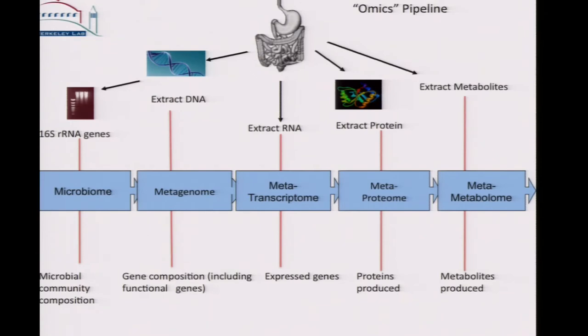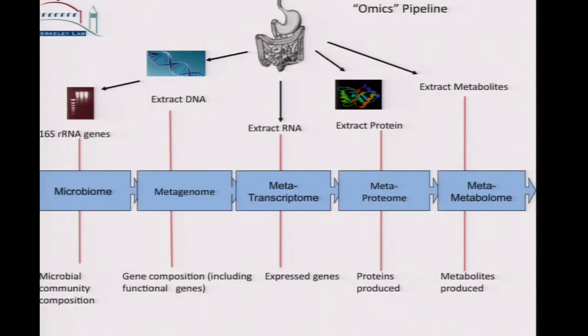So in order to understand function, we do have access to omics tools nowadays. I refer to this as an omics pipeline. At the very beginning of the pipeline, where we've really focused a lot of our work so far, is on the composition — using 16S sequencing to understand the microbial community composition, which I would call the microbiome. The next level is the metagenome: sequencing not only the phylogenetic genes but also the functional genes. The next step is to look at the RNA — which of those genes are expressed — then the proteins of those expressed genes, which ones are translated. And then finally the metabolites, or the metabolome, which are important for carrying out many of the reactions in our bodies.